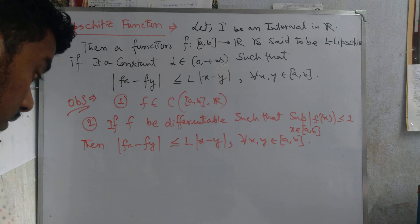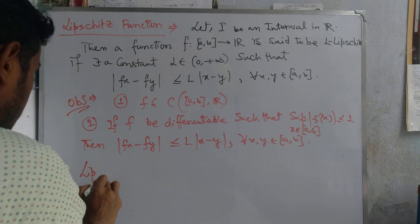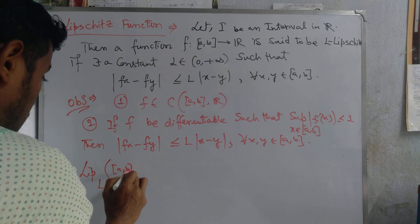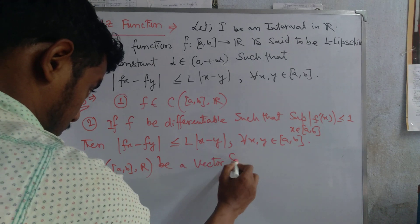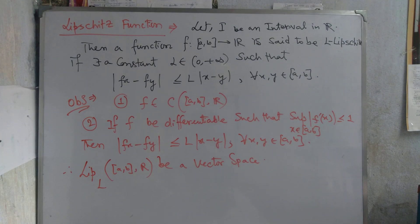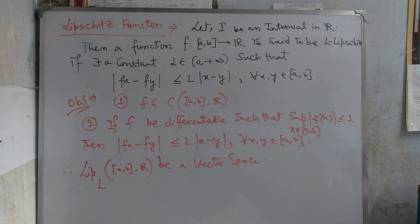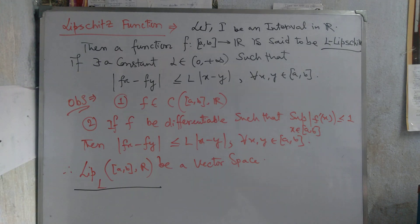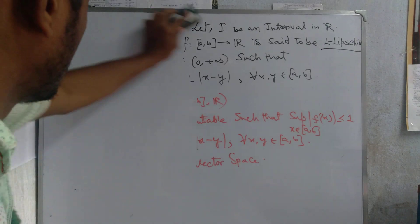The set of all Lipschitz functions from (a,b) to ℝ forms a vector space. The set of all Lipschitz functions, denoted L, from (a,b) to ℝ is a vector space.